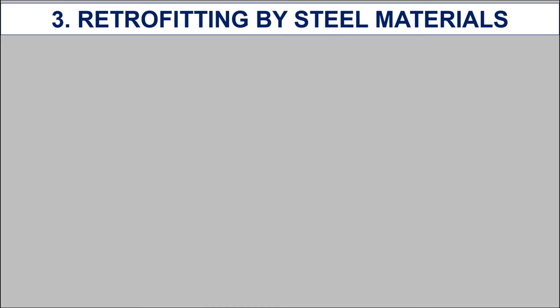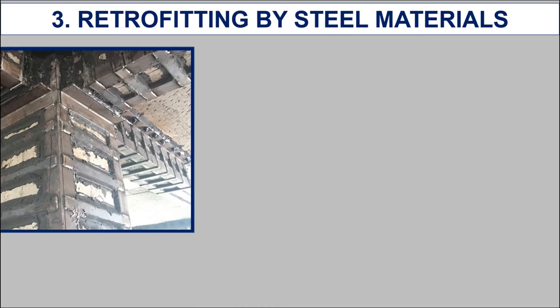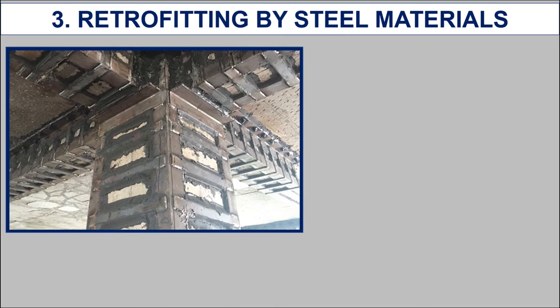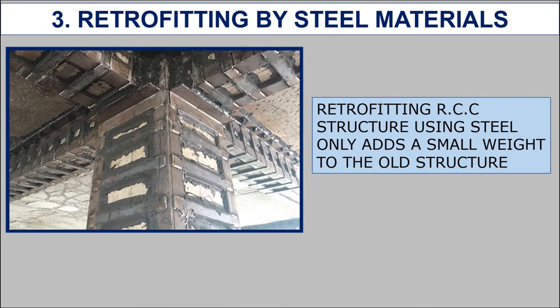The third method is retrofitting by steel materials. The use of steel for retrofitting RCC structures adds only a small weight to the old structure. It is a retrofitting technique that causes minimum disruption to the building occupants. There are two types of retrofitting methods: retrofitting by steel sections and retrofitting by steel bracing.